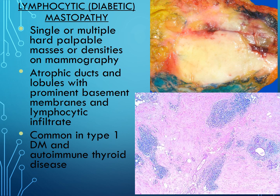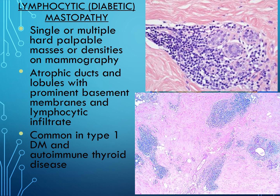Diabetic mastopathy, also known as lymphocytic mastopathy, can cause firmness to the breast with single or multiple hard palpable densities or masses — a nice mimicker of cancer. Under the microscope you see atrophic ducts and lobules surrounded by lots of lymphocytes and fibrosis. This is very commonly seen in diabetes as well as other autoimmune diseases.